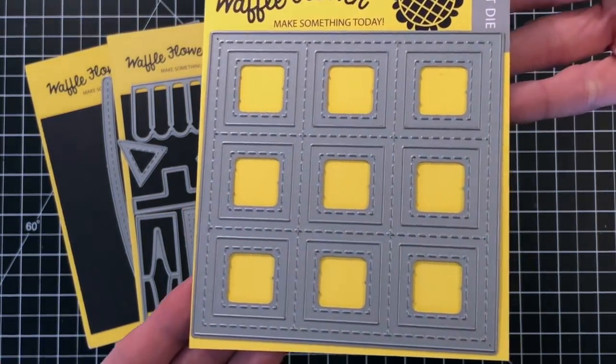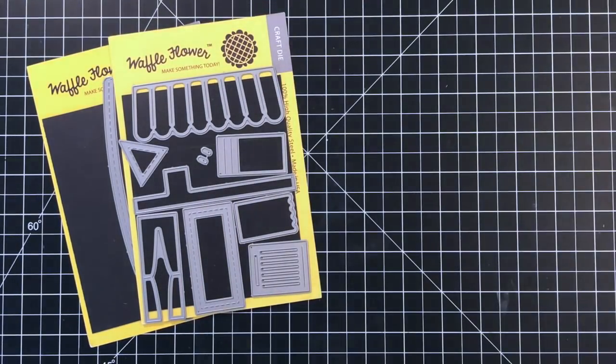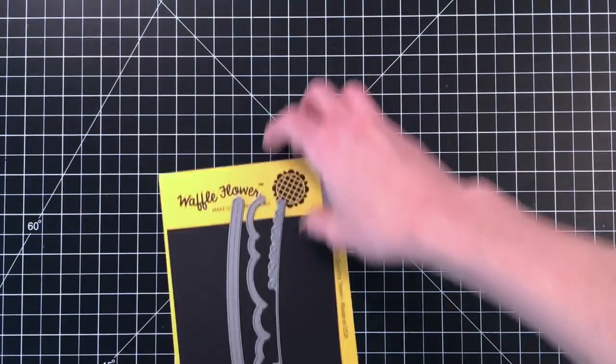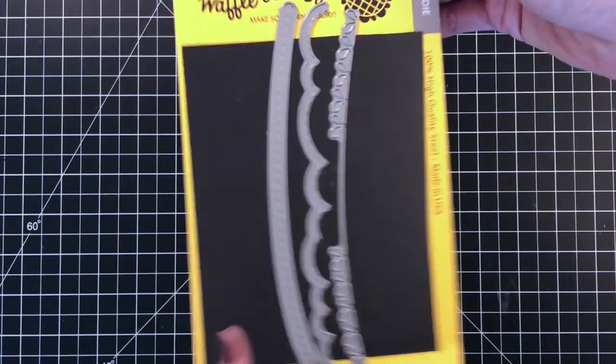This is also from our spring release. This is called the Nine Grid Die. I'll be using this to help build my scene. I'll also be using the Apartment Builder Die again and the Scenery Die as well.